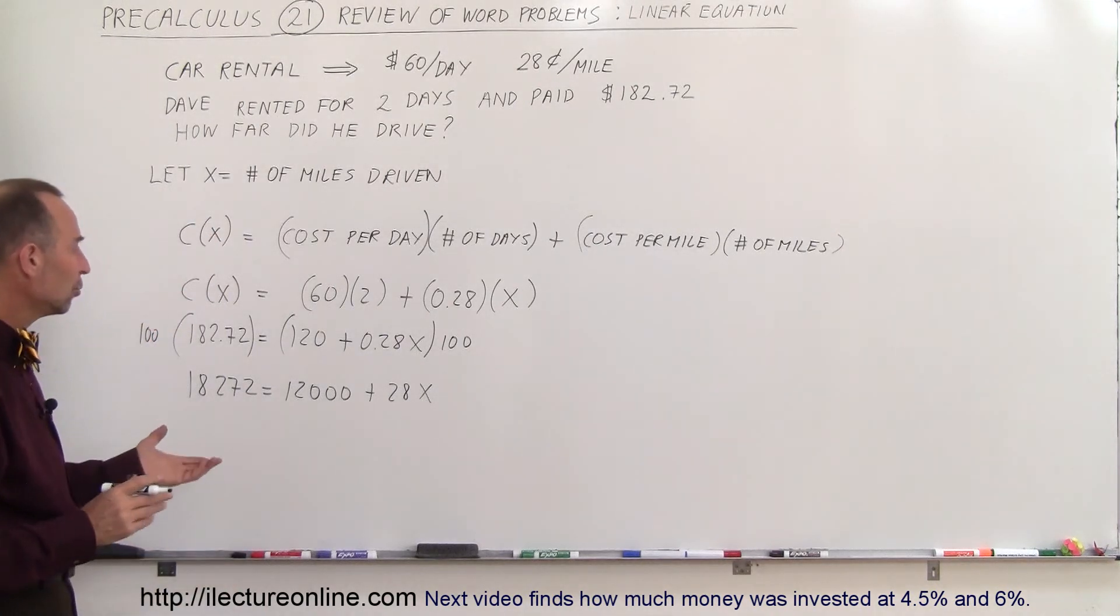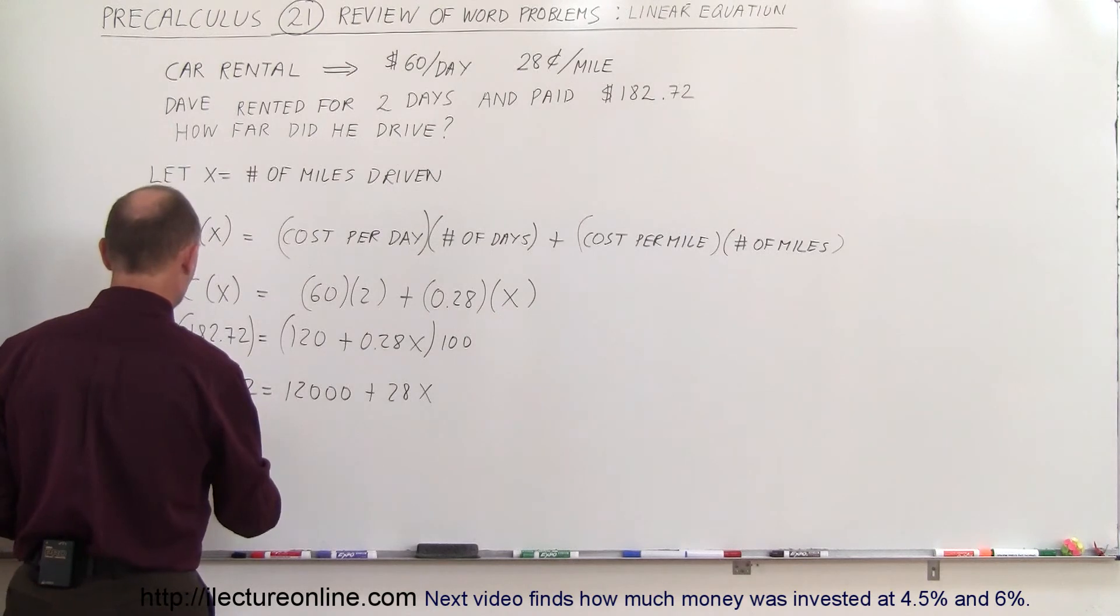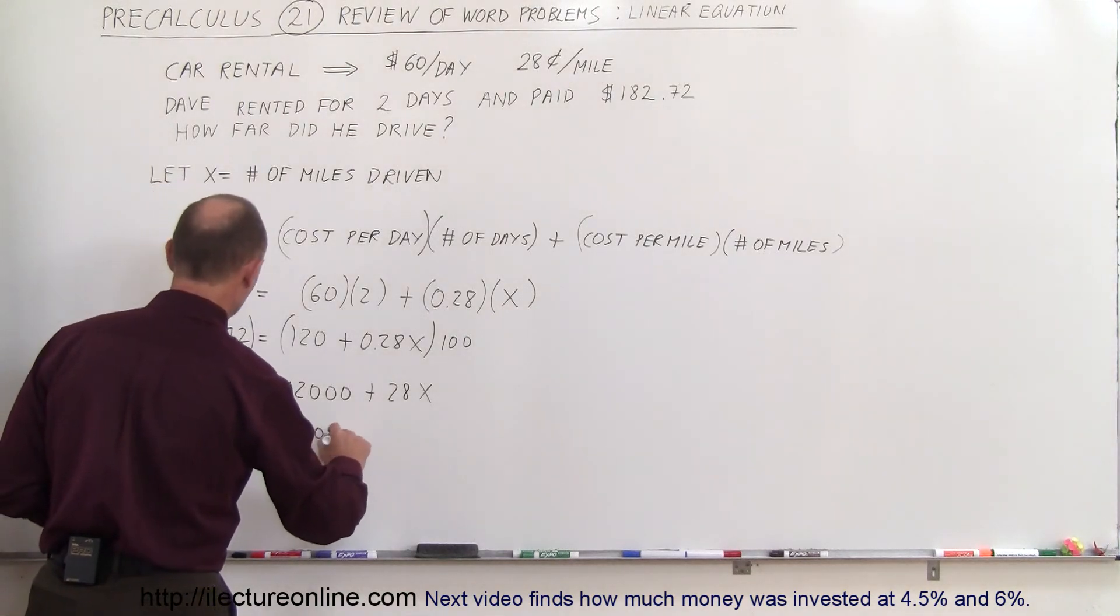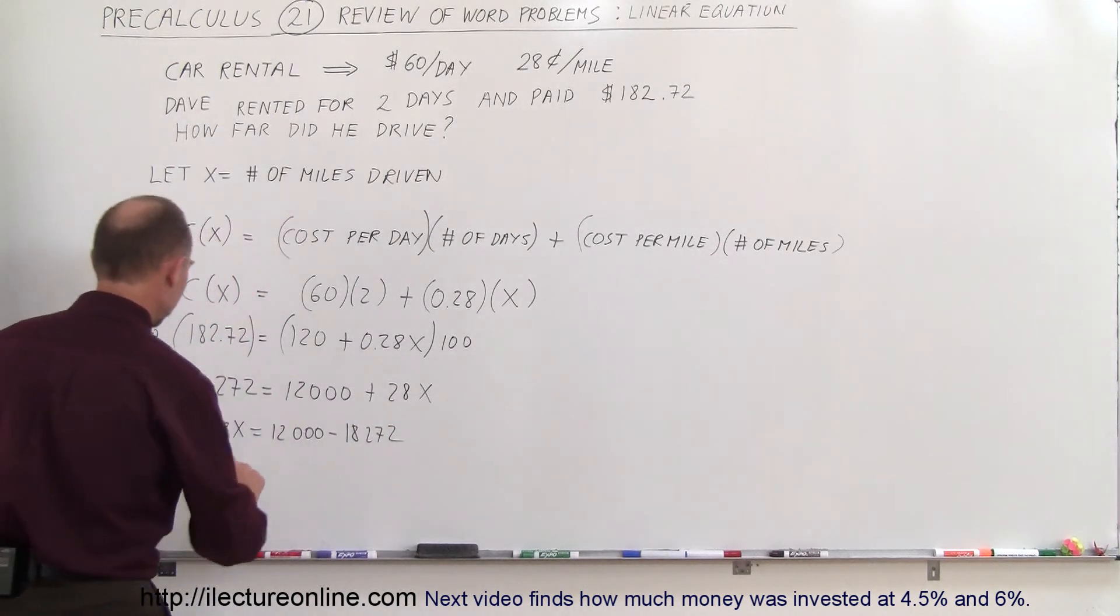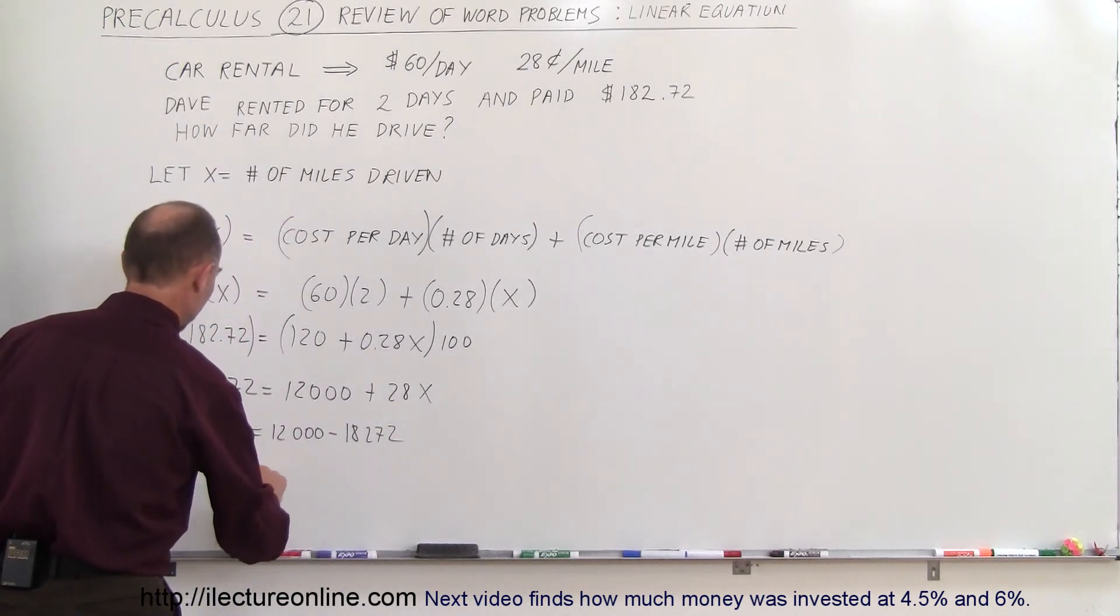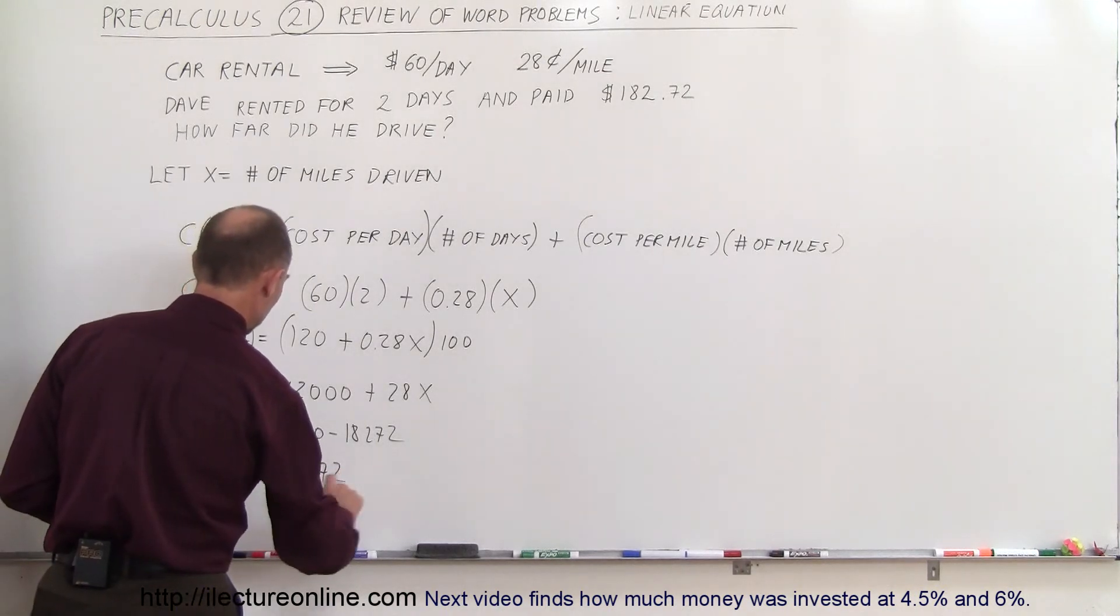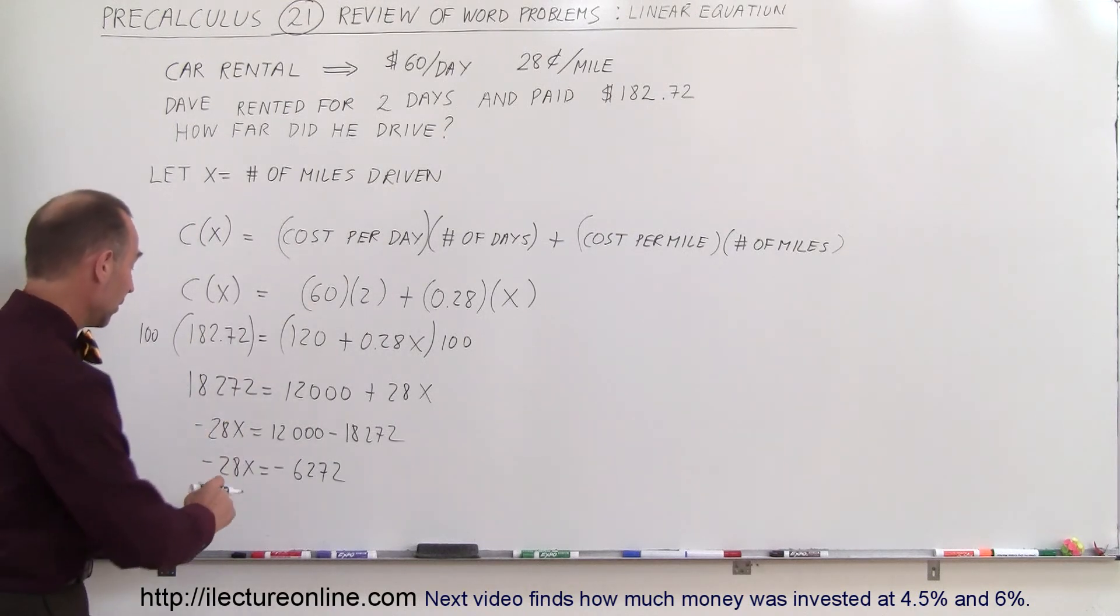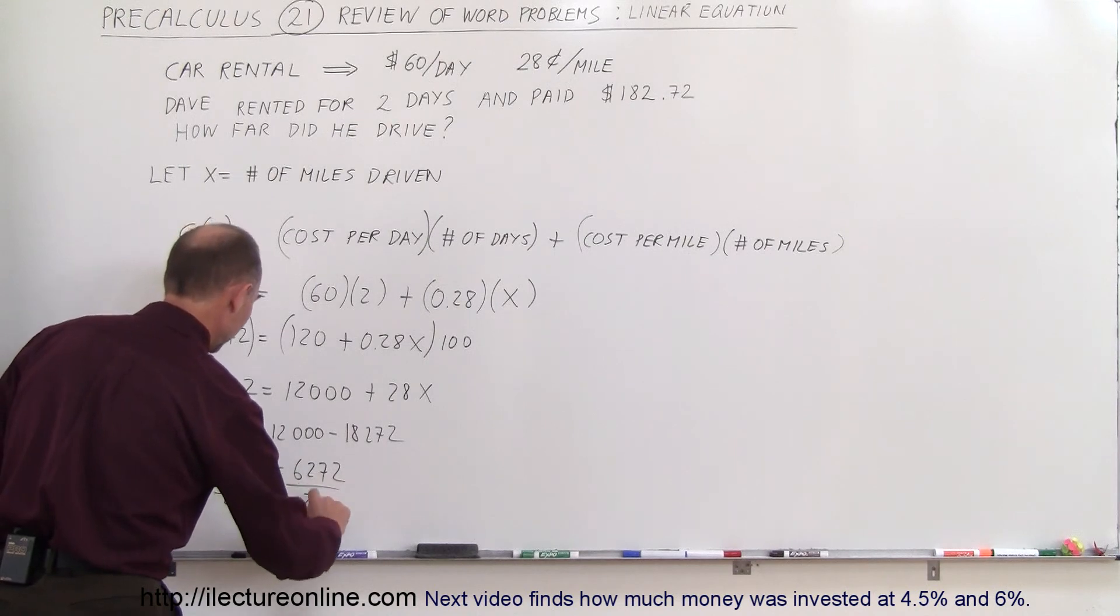Alright, so now I want to move all the variables with the X to one side and everything else to the other side. So this becomes minus 28X equals 12,000 minus 18,272. Alright, that means minus 28X is equal to, that would be a minus 6,272. And then we want to divide both sides of the equation by the coefficient of the variable. So divide both sides by minus 28.